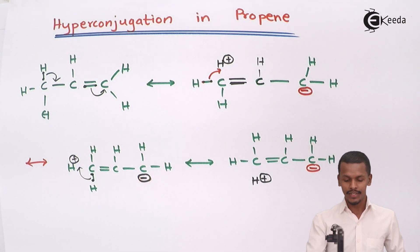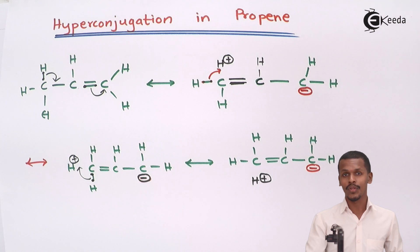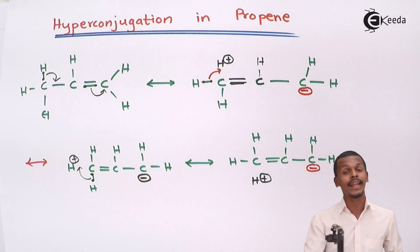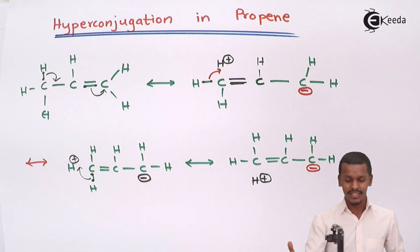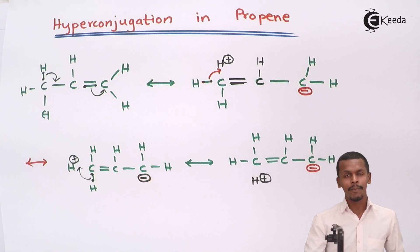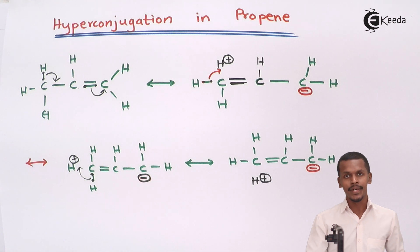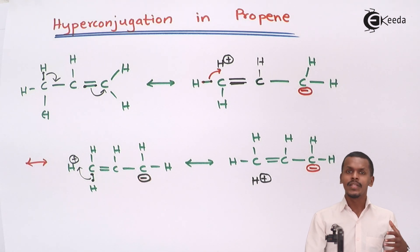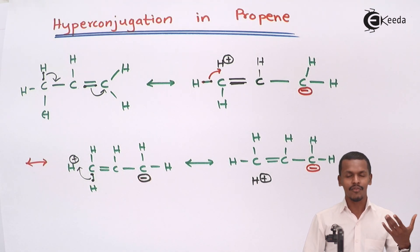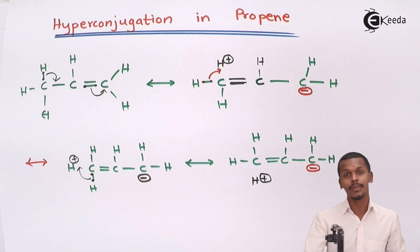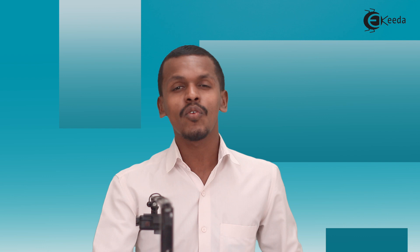So if hyperconjugation is more, then we get a more stable product. This representation of hyperconjugation in propene is very similar to resonance. The key difference is that in resonance it is pi electrons that delocalize, while in hyperconjugation it is sigma electrons. In both cases — whether a carbocation or an unsaturated compound like propene — the more the delocalization, the more stable the structure. Thank you friends for watching, please share and subscribe.